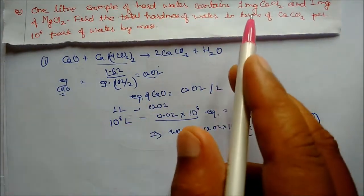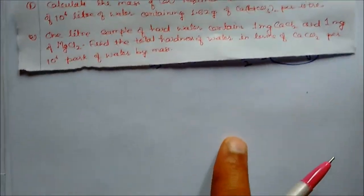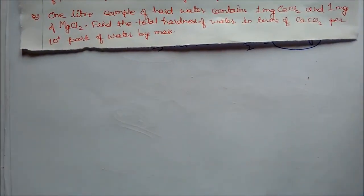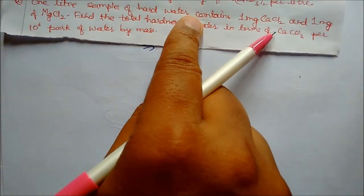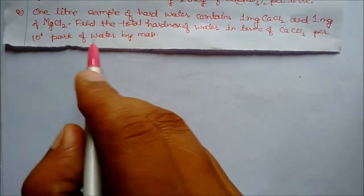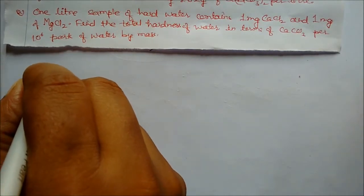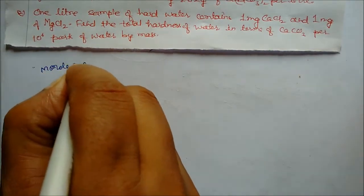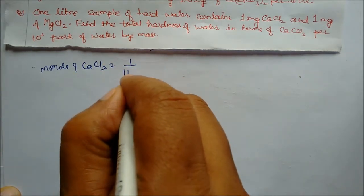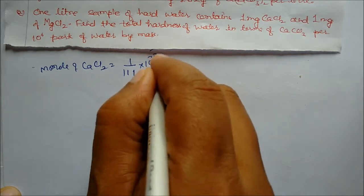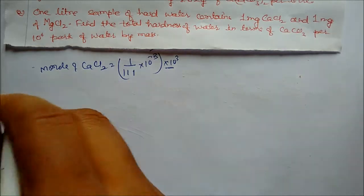Second question: a one-liter sample of hard water contains one milligram of calcium chloride and one milligram of magnesium chloride. Find the total hardness of water in terms of calcium carbonate per 10⁶ parts of water by mass. Millimoles of calcium chloride = weight / molar mass = 1 / (111 × 10³) multiplied by 1000, converting to millimoles.